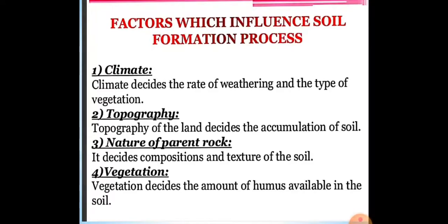The next factor is topography. Topography of the land decides the accumulation of soil — that is, the physical features of the land such as mountains, hills and rivers determine what kind of soil accumulates there. Then there is the nature of parent rock, which decides the composition and texture of the soil. Finally, vegetation decides the amount of humus available in the soil. These are the factors which influence the soil formation process.